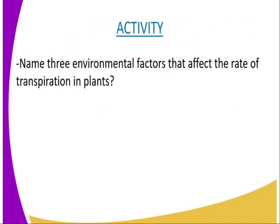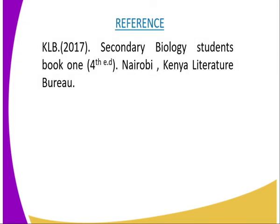Having said that, we can have the following activity whereby you will be required to name three environmental factors that affect the rate of transpiration in plants. For more reference, because there are other environmental factors that have not been covered in our lesson, you can refer to KLB Secondary Biology Students Book One, the fourth edition, Nairobi, Kenya Literature Bureau.